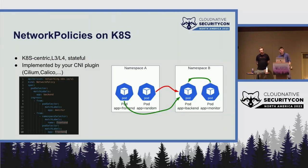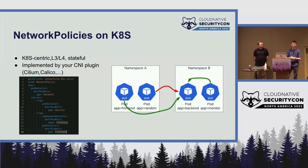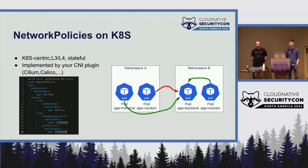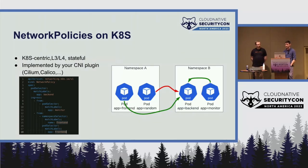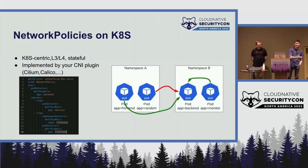Kubernetes network policies are very Kubernetes-centric — defined as CRDs inside Kubernetes. They allow you to use the Kubernetes syntax, meaning you can use labels to select pods without explicitly defining IP addresses. They are implemented by default by your CNI plugin, such as Cilium or Calico. A typical example is a two-tier application where you want the backend reachable only from within its own namespace, and perhaps also from the frontend, selecting namespaces and pods based on labels.